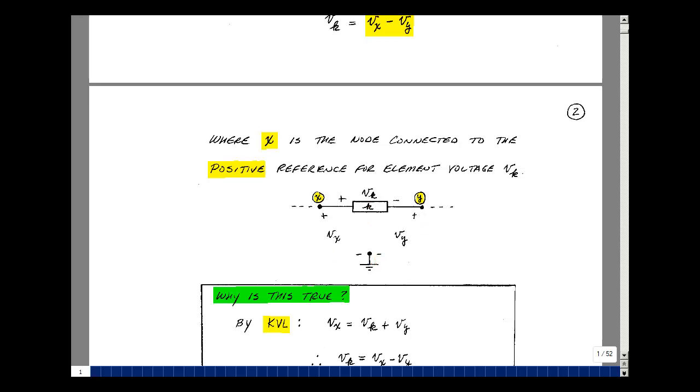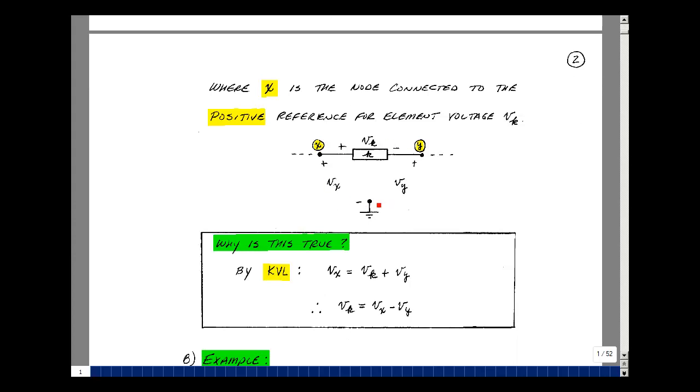Now, why is this true? Well, let's do Kirchhoff's voltage law around this loop. The rise in voltage is V sub X, the drop is V sub K plus V sub Y. If we take this equation and solve for V sub K, it's equal to V sub X minus V sub Y. And that's our property.